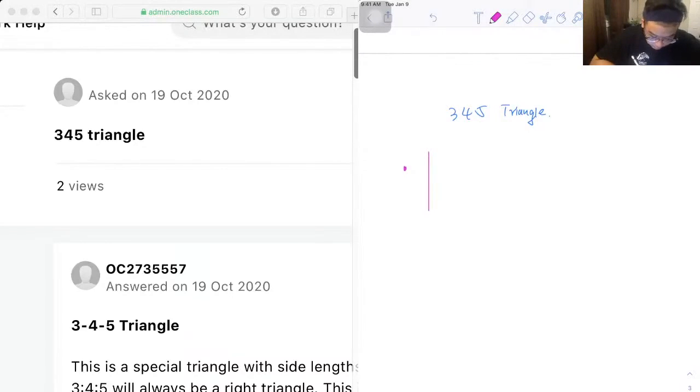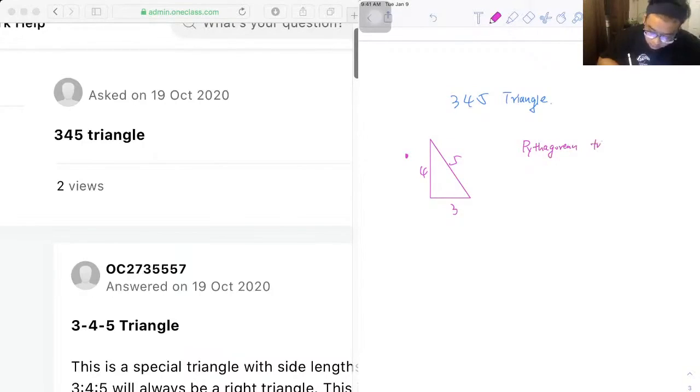It just means a right triangle with side lengths of 3, 4, and 5. This is a special triangle with side length ratios of 3:4:5, and it will always be a right triangle. This is called the Pythagorean triple. So let's write that down: Pythagorean.